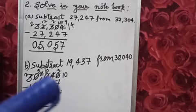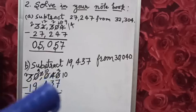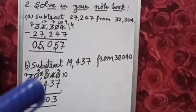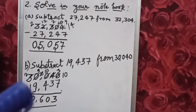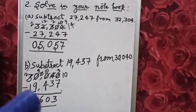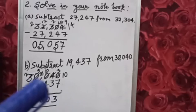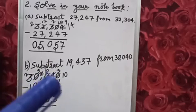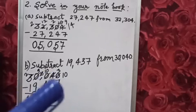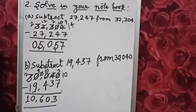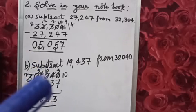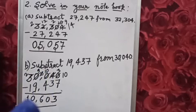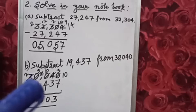Now again, 0 minus 4. We have to take borrow again. The next number is 0, so this 0 will take borrow from 3. After taking borrow, this 0 will become 10. Then after taking borrow from 10, this 0 will also become 10. So 10 minus 4 is 6. This 10 became 9, 9 minus 9 is 0, and 3 became 2.